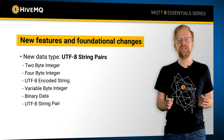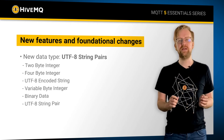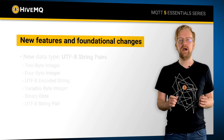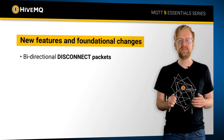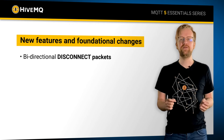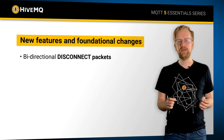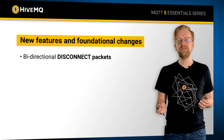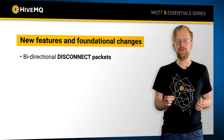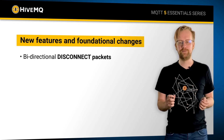With the introduction of server disconnect packets, a broker can now let the client know about the reason why it gets disconnected, instead of simply closing the connection. Possible reasons for disconnections include exceeded quotas or protocol errors.